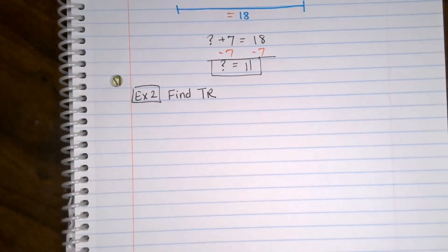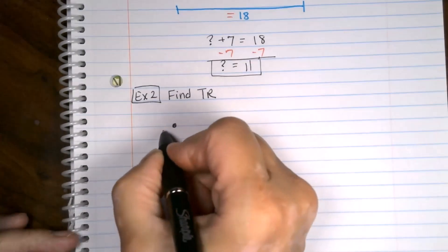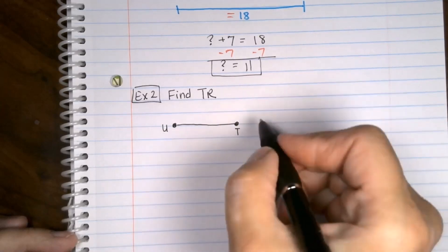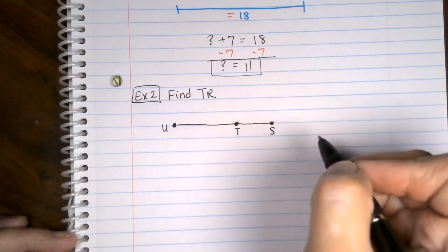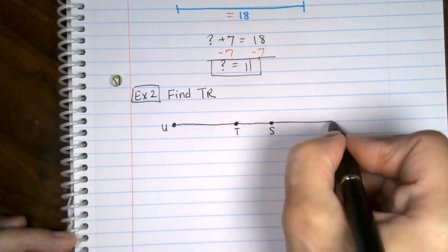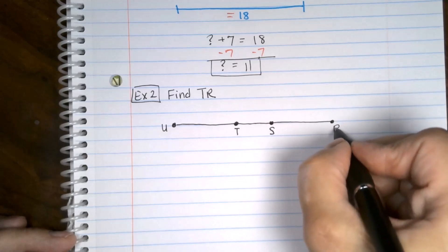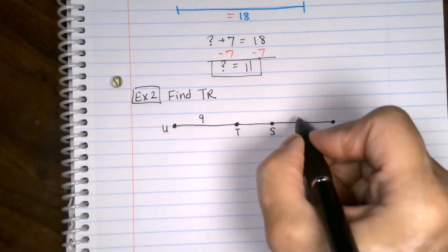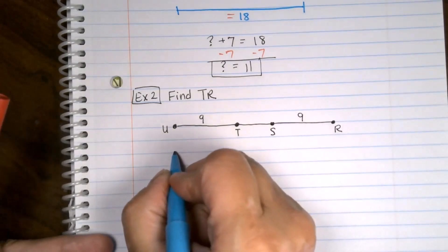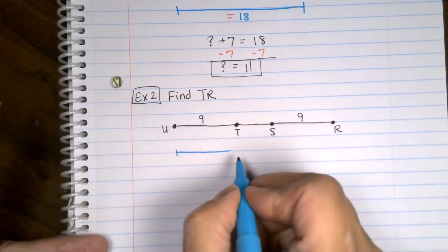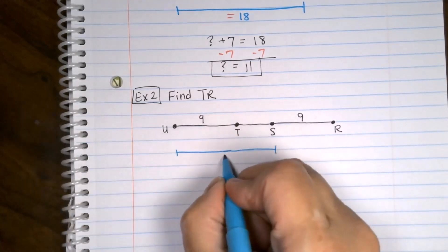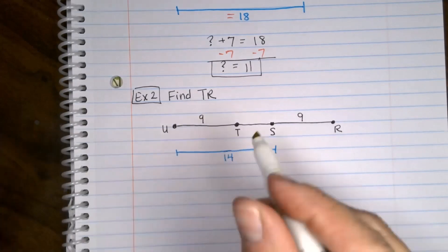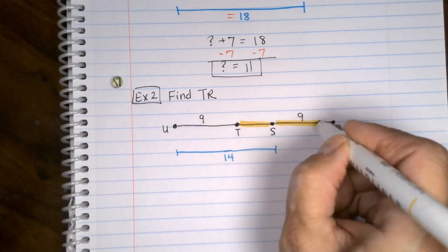All right, we're going to find the length of TR. I'm given a segment that is starting at the point U and goes to the point T. And then there's another segment that starts at T and goes to S. And then there's another segment that goes all the way over to the last point, which is R. Some information that we're given is that this one is nine. From U to T is nine. From S to R is also nine. And then they're also told that from U to S is 14.